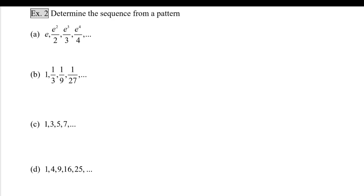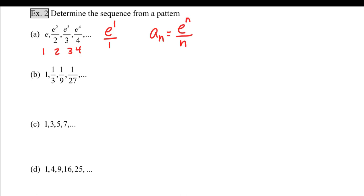Example 2: we're going to try to determine the sequence from a pattern. These are a little more challenging because we have to figure out where we can see a 1, 2, 3, and 4. The first one is the first term, second term, third term, fourth term. Keep in mind that e to the 1 over 1 is equal to e. So we can say that a sub n is equal to e to the n over n — we want to find where we see a number increasing by 1 that we can replace with n.